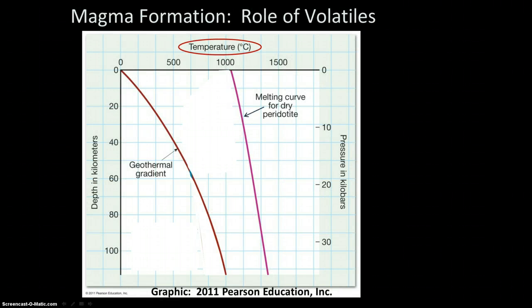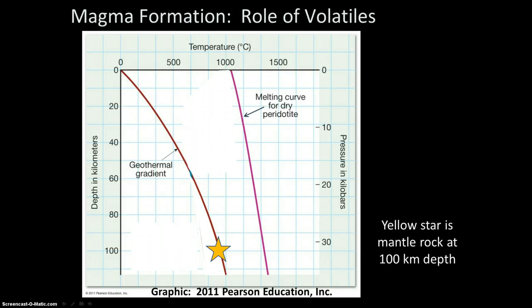This is a graph that shows temperature up above on the x-axis versus depth, which is the equivalent of pressure on the y-axis. On the left we have depth in kilometers ranging from zero at the top to more than 100 kilometers at the bottom. On the right we have the pressure measured in kilobars. We are thinking about what the temperatures are like simply due to the increases in temperature with depth. We are thinking about a mantle rock at about 100 kilometer depth. Just looking at the normal geothermal gradient, we would be at just under 1,000 degrees Celsius when we are at 100 kilometer depth.